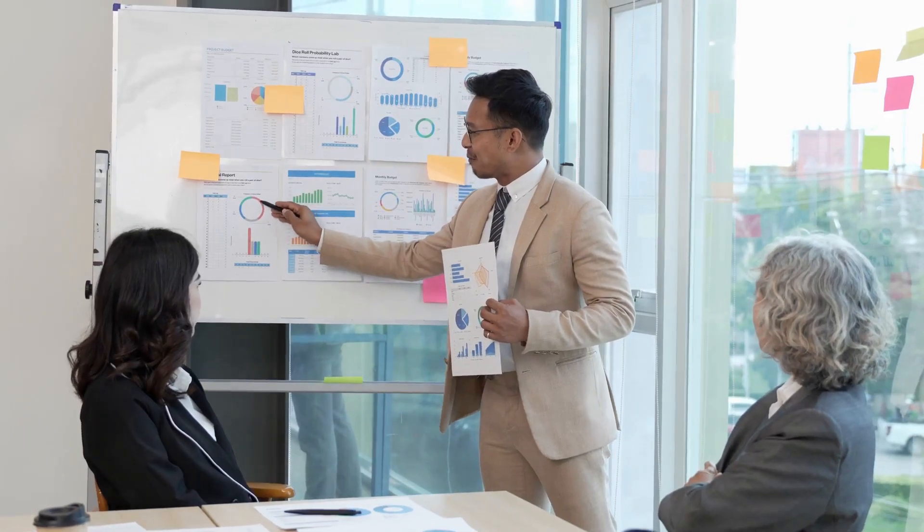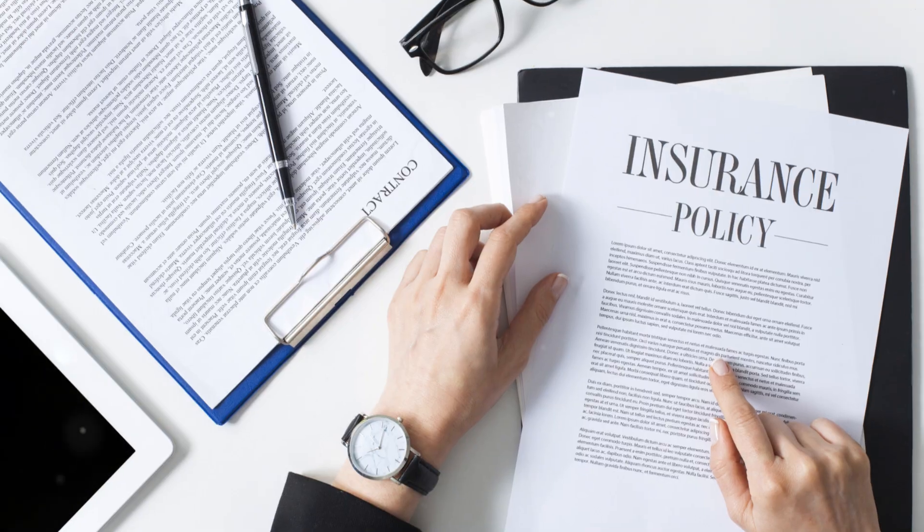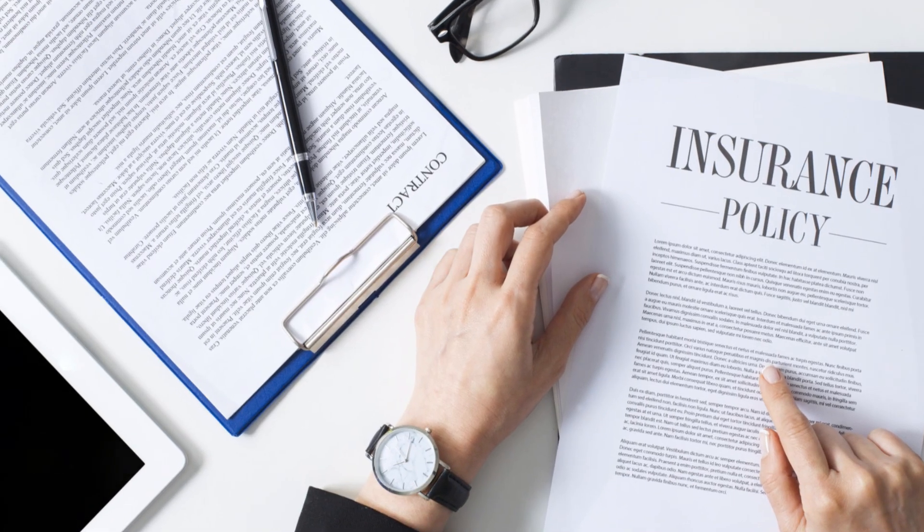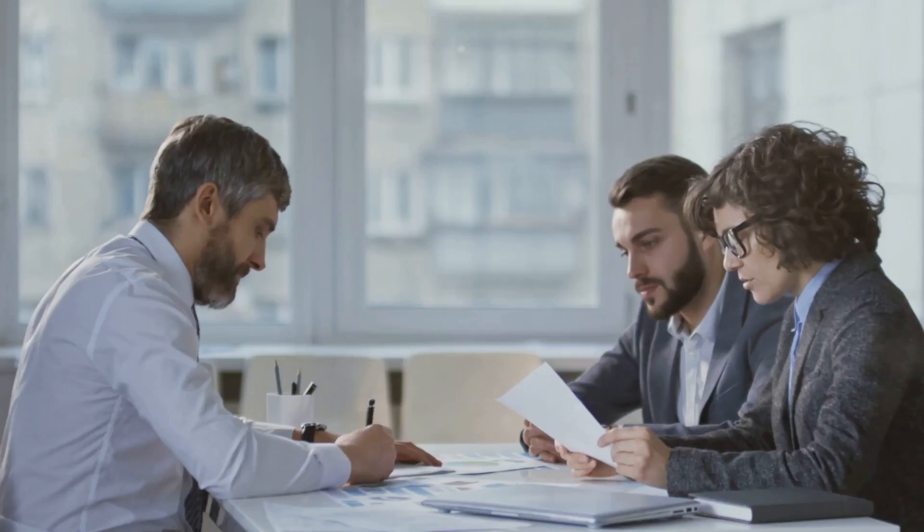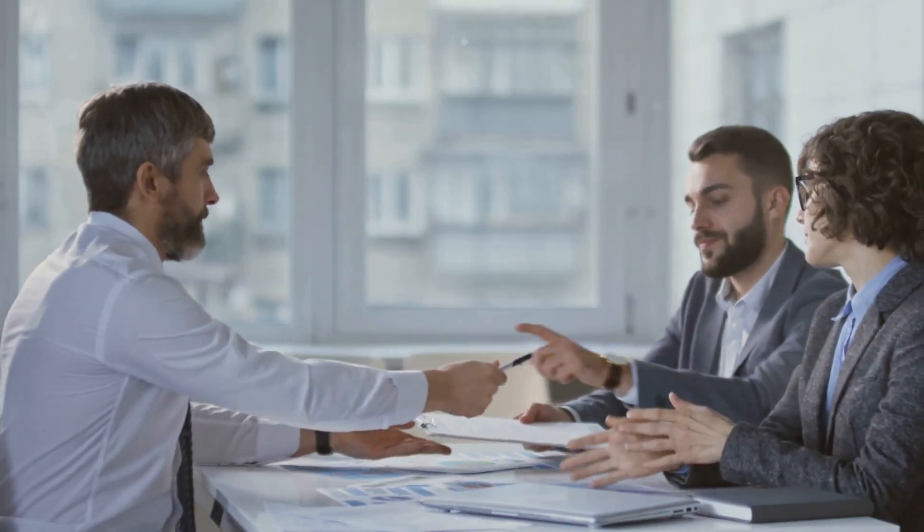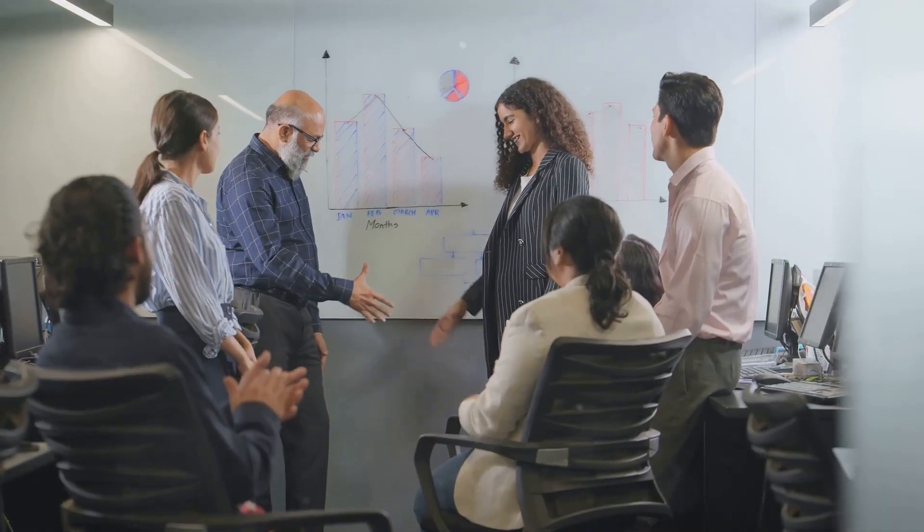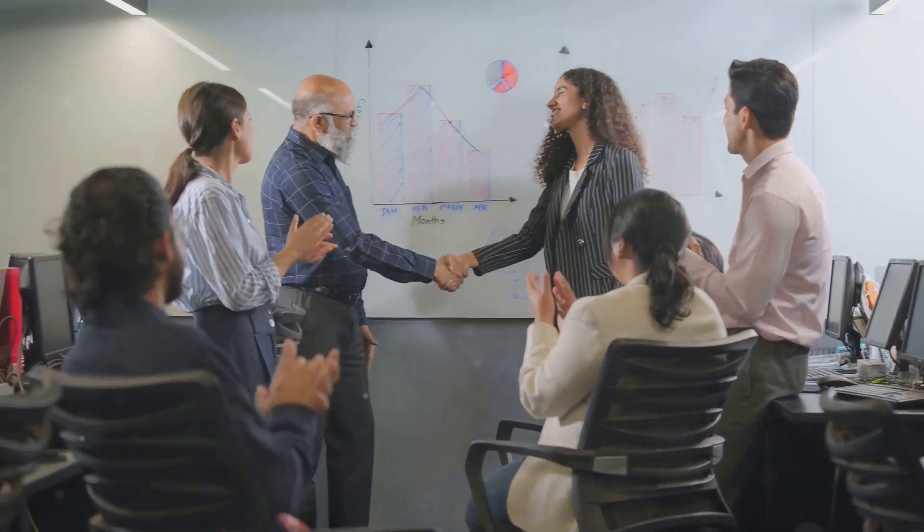One effective way is to seek alternative protection solutions. This could mean looking into industry-specific insurance or bundling policies to get a better deal. Another powerful tactic is to make brokers and insurers compete against each other. By conducting an insurance broker RFP, request for proposal, you can ensure you're getting the best value for your money. Remember, competition can drive prices down and get you more favorable terms.